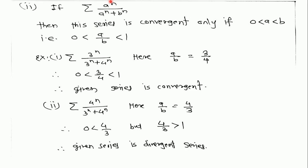We can generalize this: if we have a series a^n / (a^n + b^n), then this series is convergent if a/b is greater than 0 and less than 1. For example, for the series 3^n / (3^n + 4^n), here a/b is 3/4, which is greater than 0 and less than 1, therefore this series is convergent. For the series 4^n / (3^n + 4^n), here a/b is 4/3, which is greater than 1, therefore this is a divergent series.